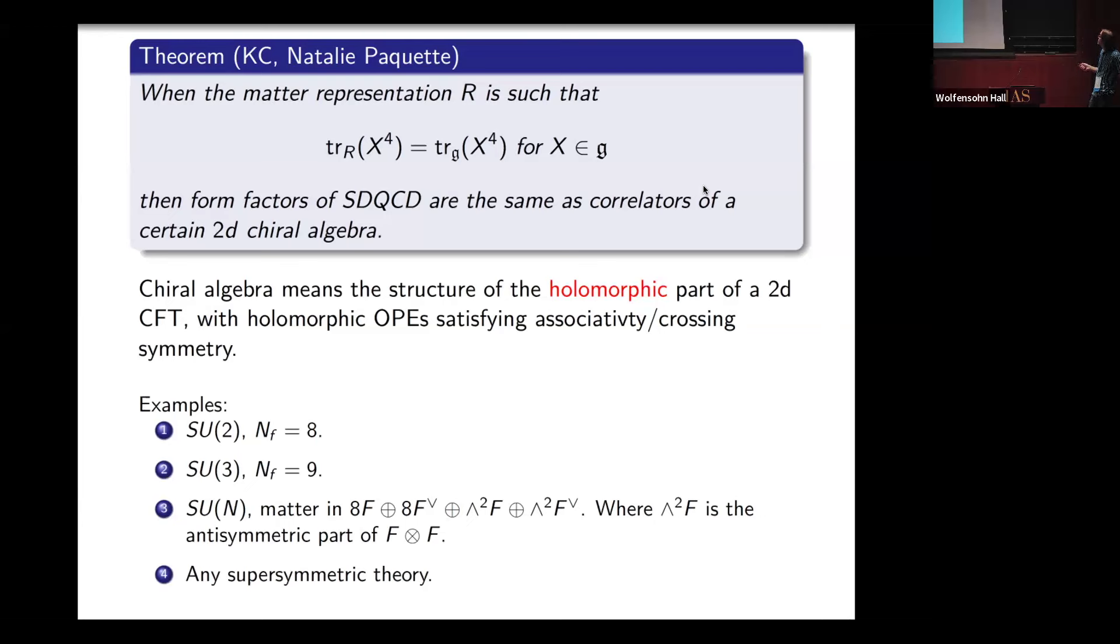This is a bit of a strange condition. Here are some examples: SU2 with NF equals 8, SU3 with NF equals 9. The continuation is SUN with NF equals 8, and then I have to add the exterior square of the fundamental. The exterior square means the antisymmetric part of F tensor F. For example, if N is 3, then this piece is just another copy of fundamental plus anti-fundamental. If N is 2, this is just a singlet and can be ignored.